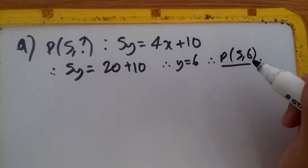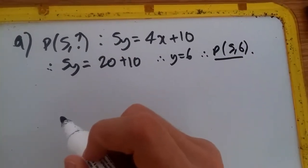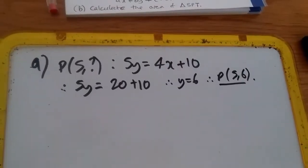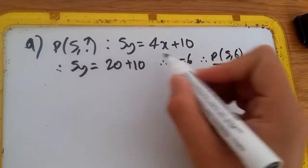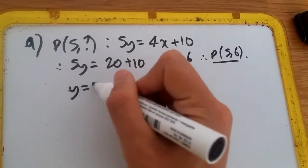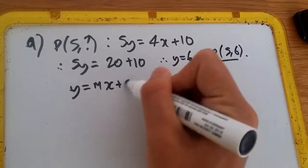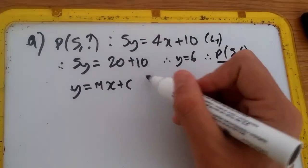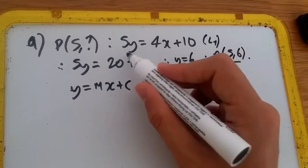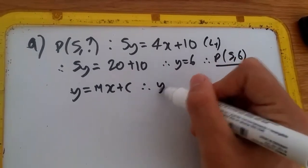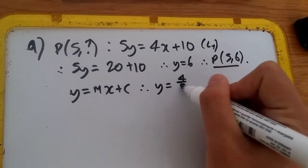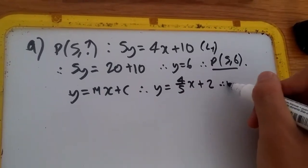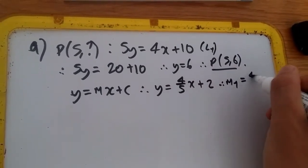Now we need to find the gradient. All we do is rearrange this equation into the form y = Mx + C. This will give us the gradient of the L1 equation. Rearranging, we divide by 5. We get y = 4/5x + 2. Hence, the gradient of L1 is 4/5.